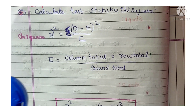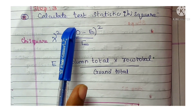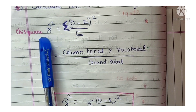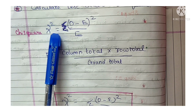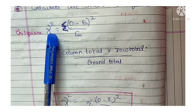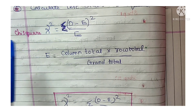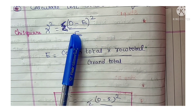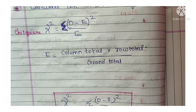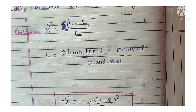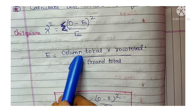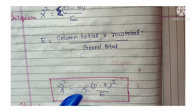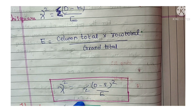Step 3 is calculating the chi-square test statistic. The formula for chi-square is: χ² = Σ (O − E)² / E, where O is the observed frequency and E is the expected frequency. The formula for expected frequency E is: column total × row total / grand total.